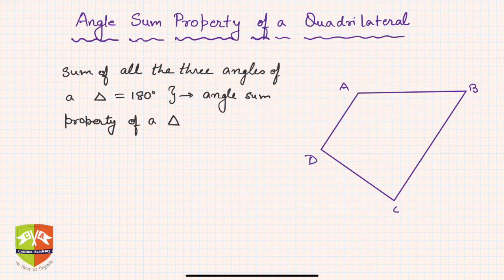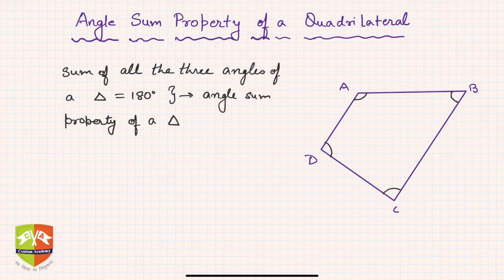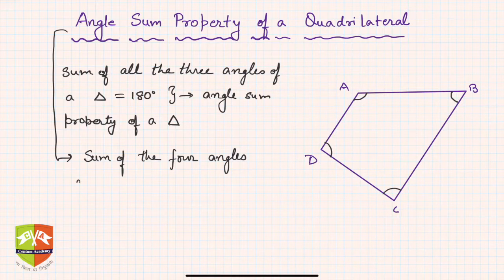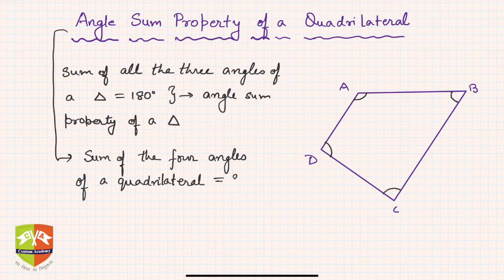You know that there are four angles in a quadrilateral: angle A, angle B, angle C, and angle D. The angle sum property states that the sum of the four interior angles of a quadrilateral is equal to 360 degrees, or in terms of radians, two pi radians.